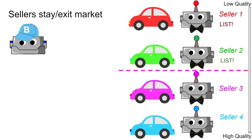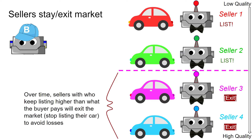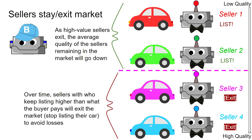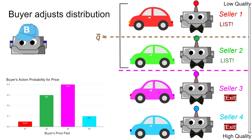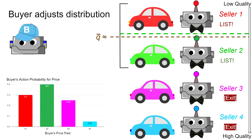As this game continues, some sellers will realize that listing their car is not favorable for them, as their car is of a higher value than the price the buyer keeps paying. Thus, the sellers will exit the market, meaning that in the vast majority of cases, they will decide not to list their car in order to avoid personal losses. As they do this, the cars left in the market will have a lower average quality. Thus, the buyer will recognize that the average quality of the cars in the market is going down and similarly adjust his estimate for the average quality he should be expecting. And so, the action probability for the buyer's price will shift lower as the buyer realizes that he should be paying less in order to not get ripped off.